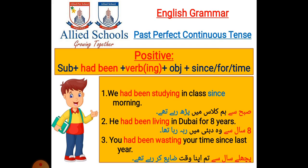Second example: He had been living in Dubai for eight years. We use 'for' here because we don't know which eight years — it shows total duration. Aat saal se wo Dubai mein raha tha. Third example: You had been wasting your time since last year. We use 'since' with 'last year' because it indicates a specific year. Pichle saal se tum apna waqt zaya kar rahe thi.